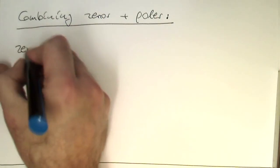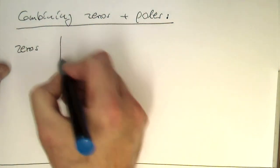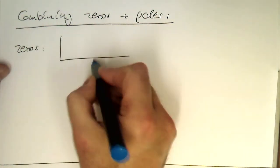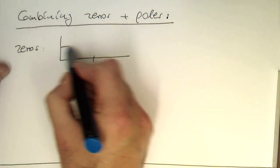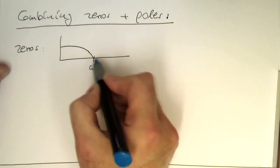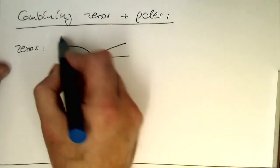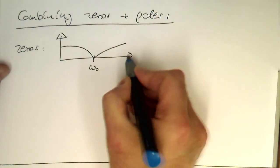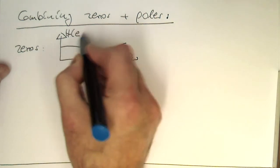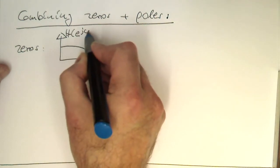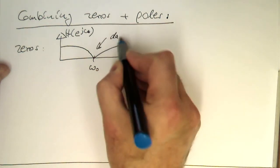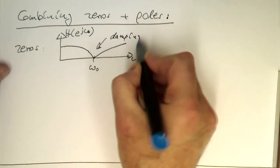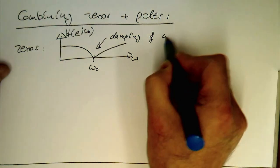Remember the zeros. What they do is, we've got this omega zero here, that they are creating a very shallow dip in the frequency response here. So that's our omega, and this was our e to j omega. So they are creating a damping.